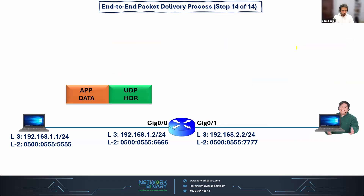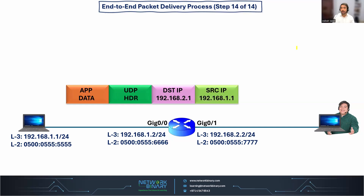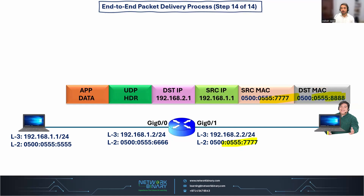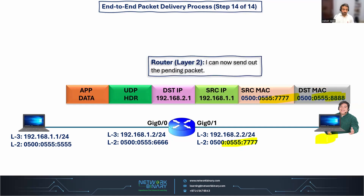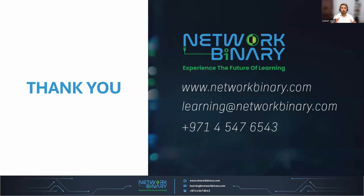The router now has all the information needed to transmit the data to the destination device. We have the full encapsulation: the application header, the UDP header at the transport layer, the IPv4 header with source and destination IP addresses, and the layer 2 frame with the exit interface MAC address as source and the receiver's MAC address as destination. Layer 2 says: I now have complete information to transmit this pending frame. The frame is sent to the destination device, and finally the receiver gets the complete frame from sender IP address 1.1. This is the complete end-to-end process communication model, step by step.